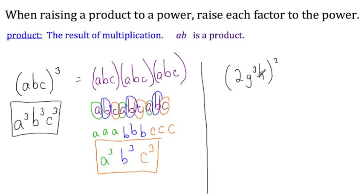Here we should check to see whether this is a product. A product is the result of multiplication. So this is 2 times G cubed times H. This indeed is multiplication, so I can use this rule. There are three things being multiplied here: a 2, a G cubed, and an H. And I need to raise them each to the power.